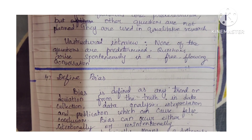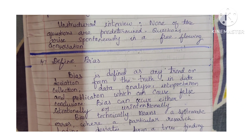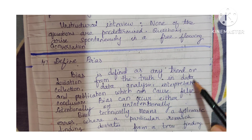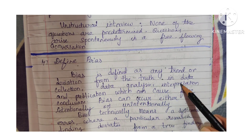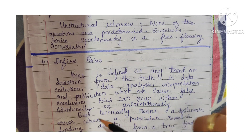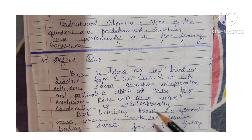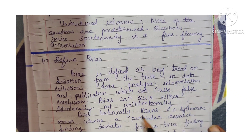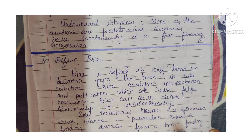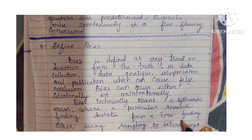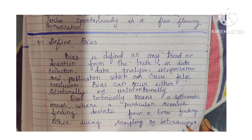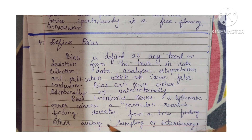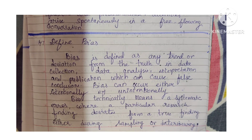Question 47: Define bias. Bias is defined as any trend or deviation from the truth in data collection, data analysis, interpretation, and publication which can cause false conclusions. Bias can occur either intentionally or unintentionally. Technically, bias means a systematic error where a particular research finding deviates from a true finding either during sampling or interviewing.